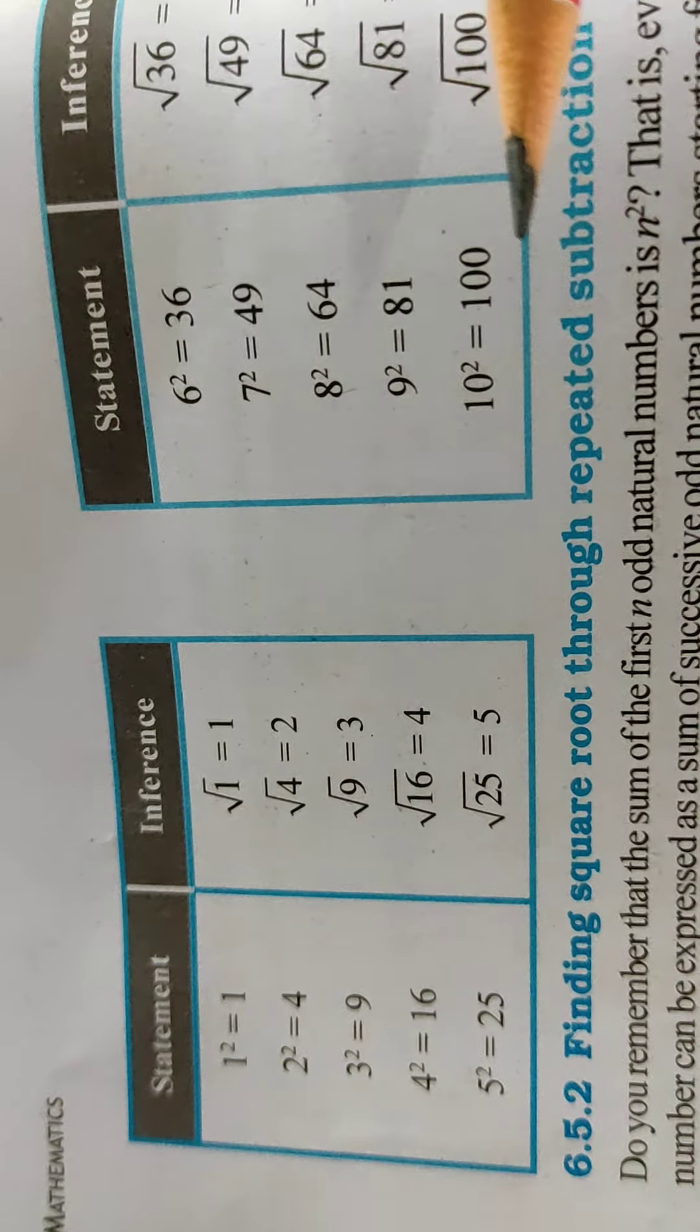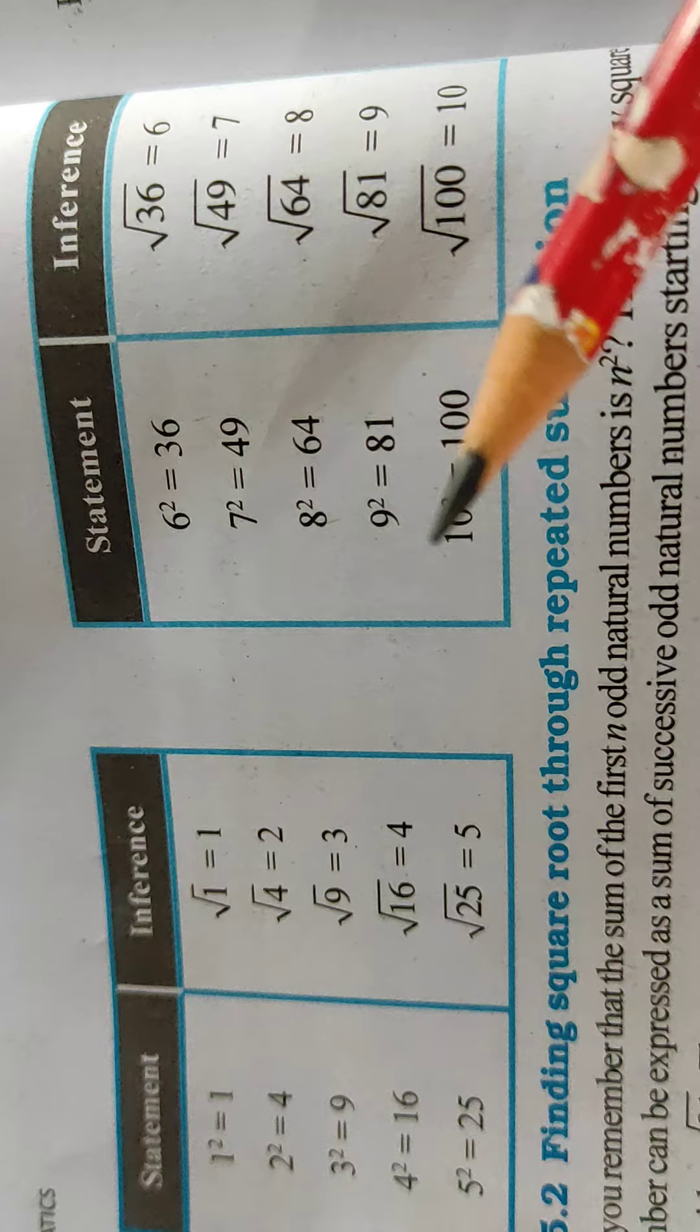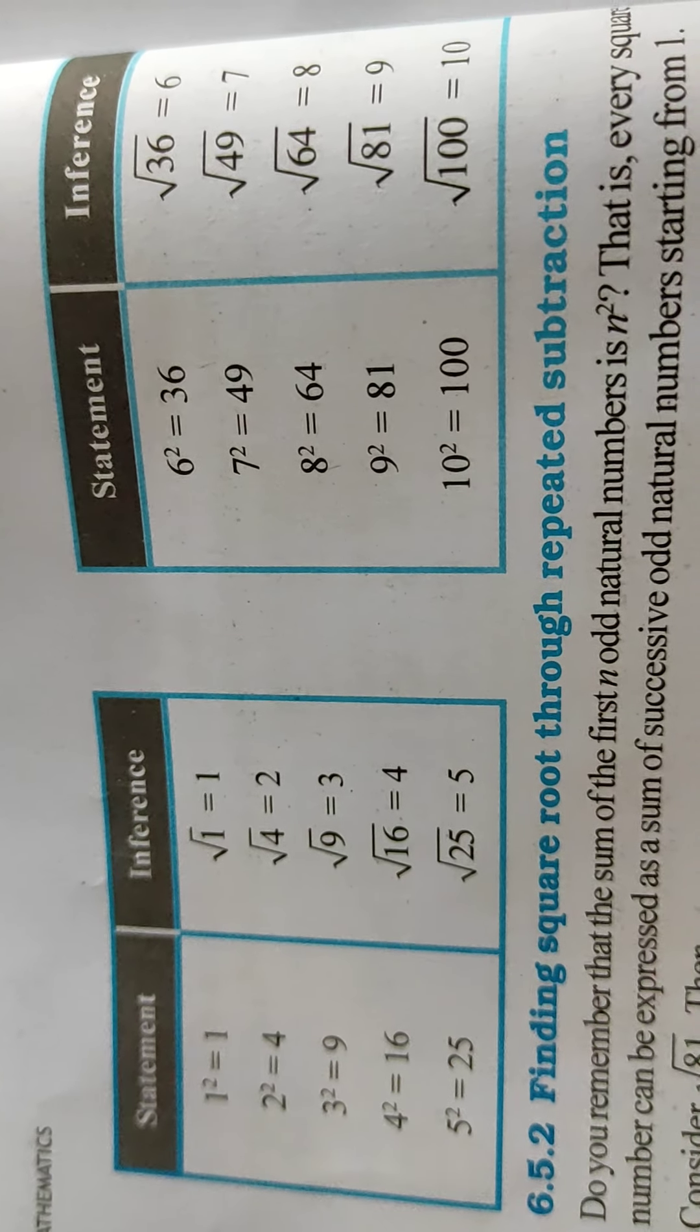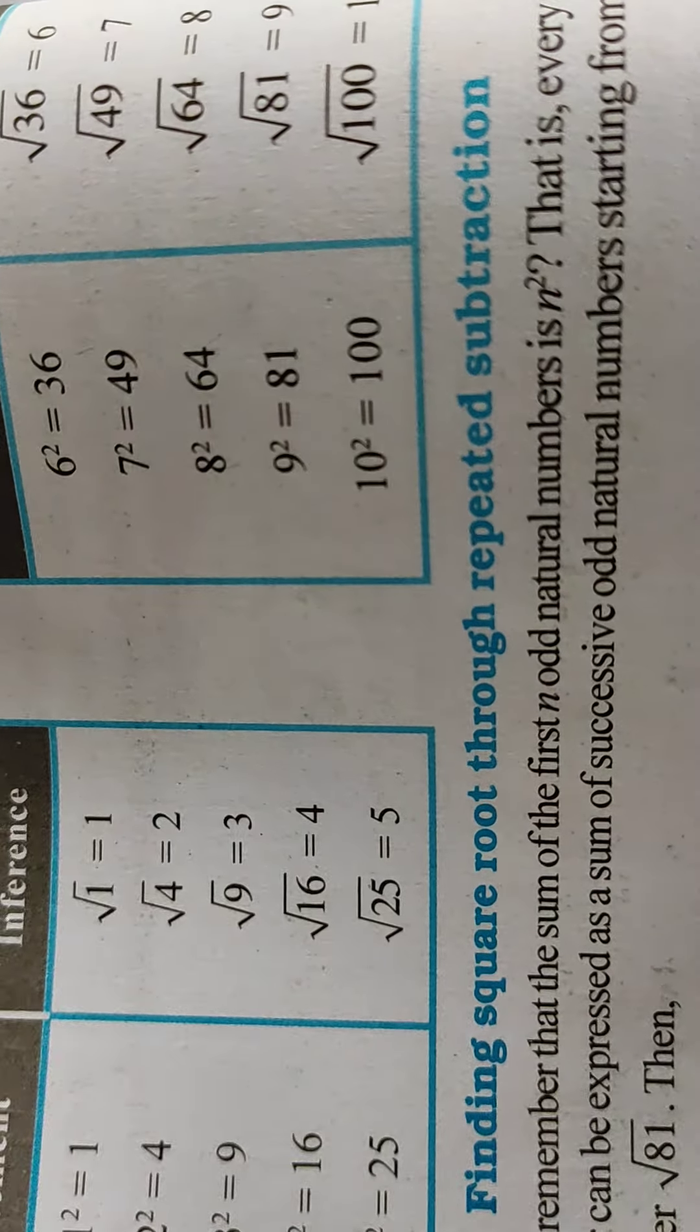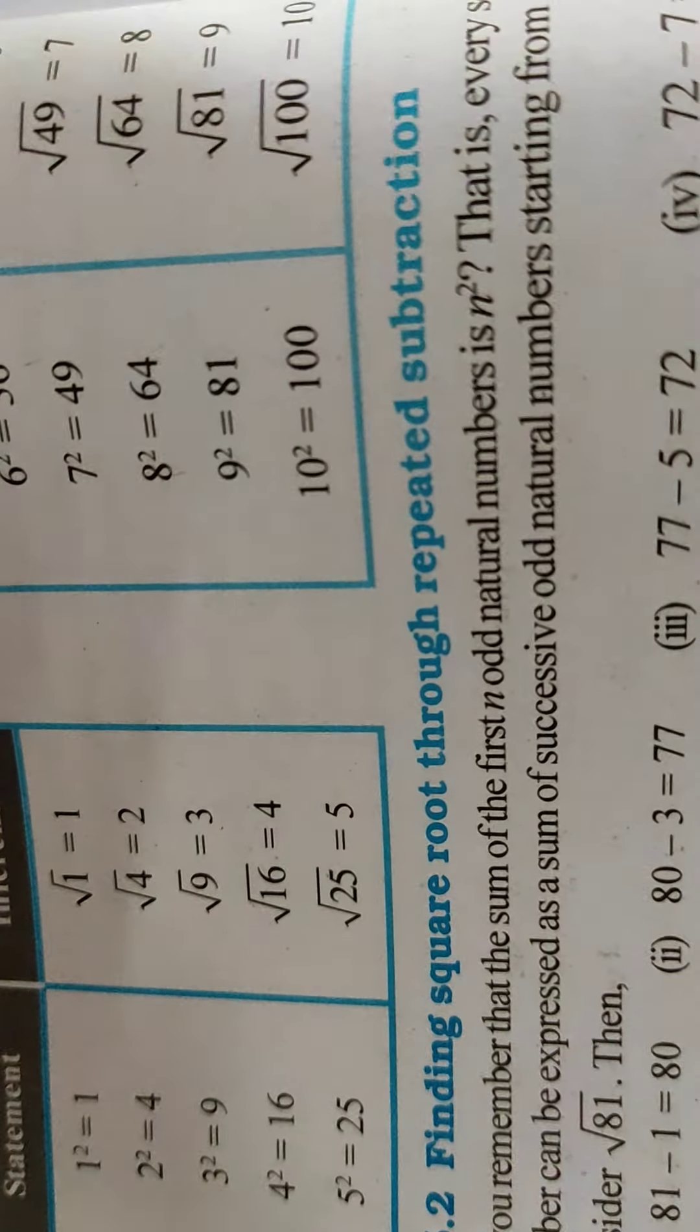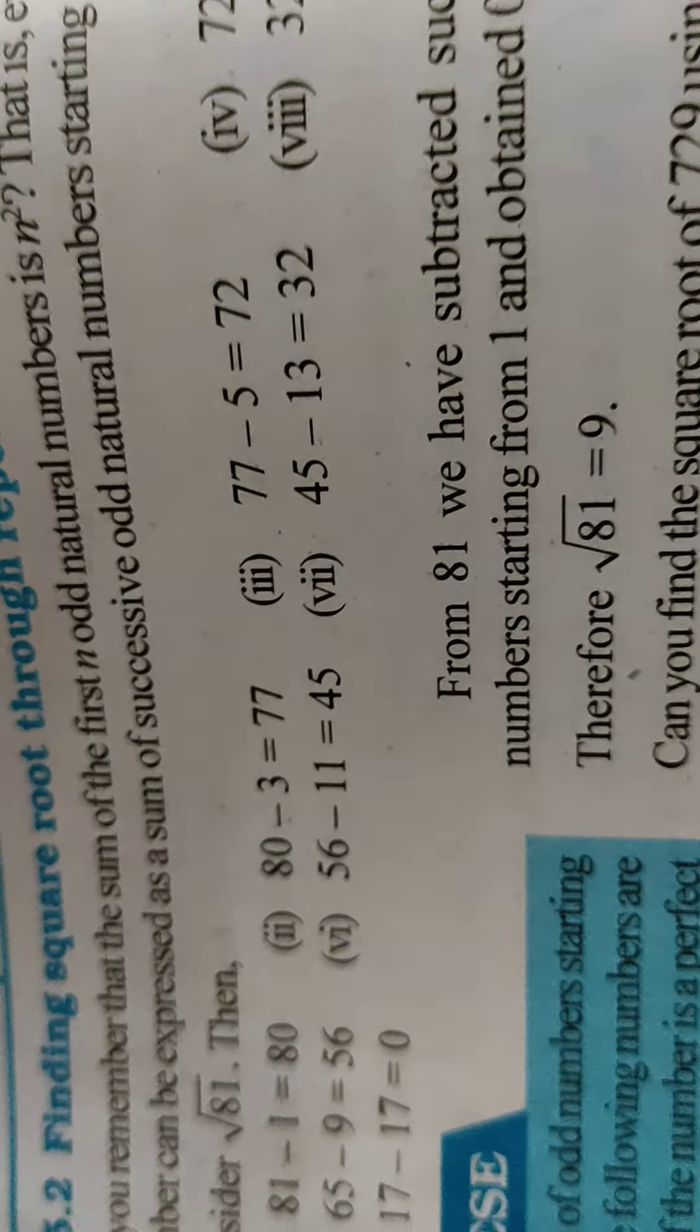Same way, 10 square is equal to 100, so square root of 100 is 10. Now finding square root through repeated subtraction. Clear? Now what we will do?